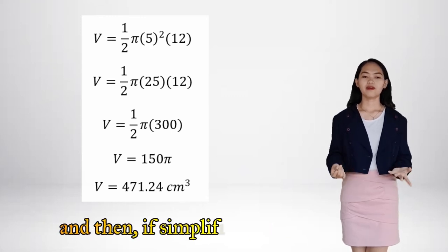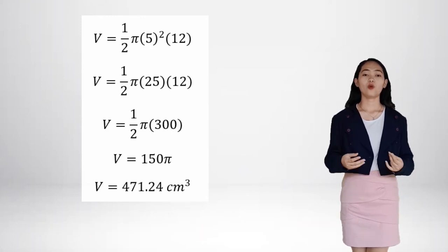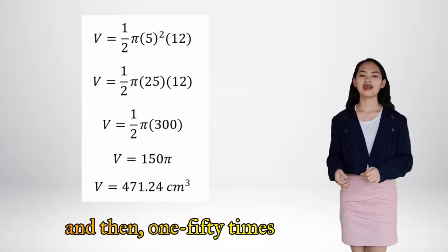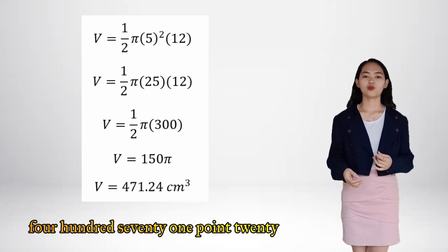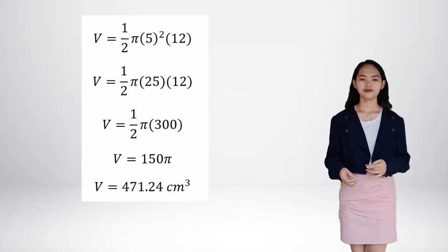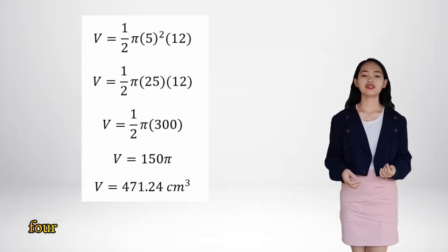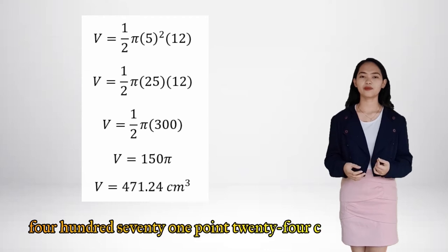And then if simplified again, we will get 150 pi. And then 150 times pi is equal to 471.24 cm cubed. Therefore, the volume of the paraboloid is 471.24 cm cubed.